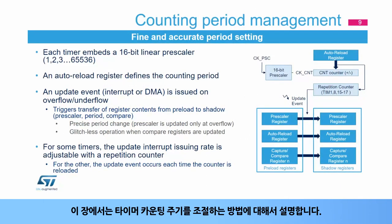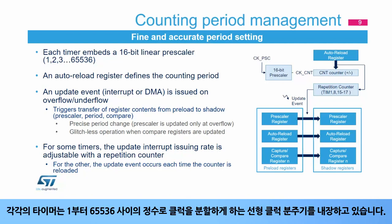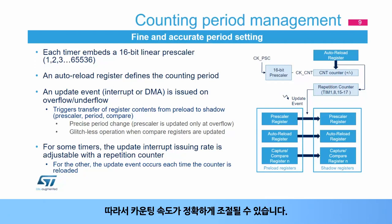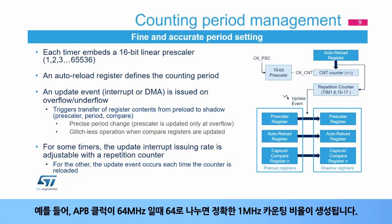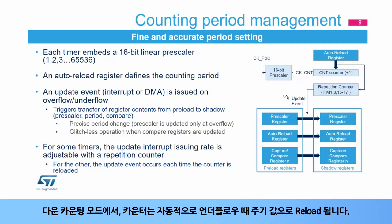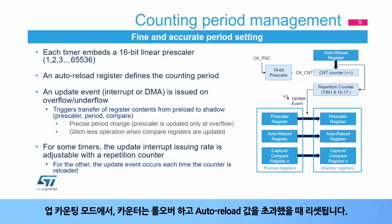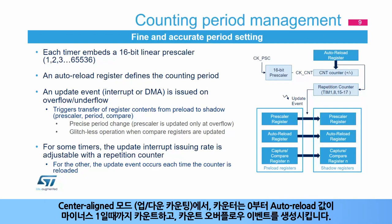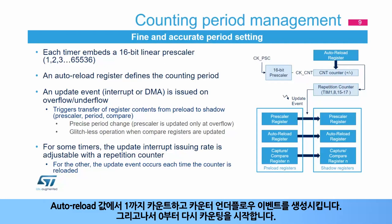Each timer embeds a linear clock prescaler, which allows you to divide the clock by any integer between 1 and 65,536. For instance, a division by 64 will yield a precise 1 MHz counting rate when the APB clock is 64 MHz. The auto-reload register defines the counting period. In down-counting mode, the counter is automatically reloaded with the period value when it underflows. In up-counting mode, the counter rolls over and is reset when it exceeds the auto-reload value. In center-aligned mode, the counter counts from 0 to the auto-reload value minus 1, generates a counter overflow event, then restarts counting from 0.